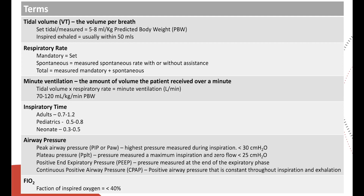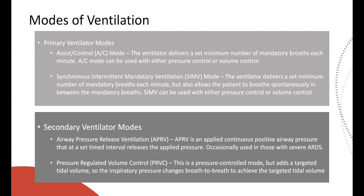When it comes to modes of ventilation, there are several types, and manufacturers even have their own. People often break them down into primary and secondary modes. A primary mode is assist control, where the ventilator delivers a set minimum number of mandatory breaths each minute. When the patient spontaneously breathes, they receive that same set delivered pressure or volume — depending on whether you're in assist control volume control or assist control pressure control. The 'control' term means the ventilator is controlling either the pressure or the volume it delivers.